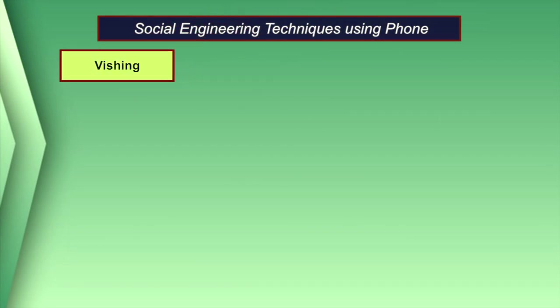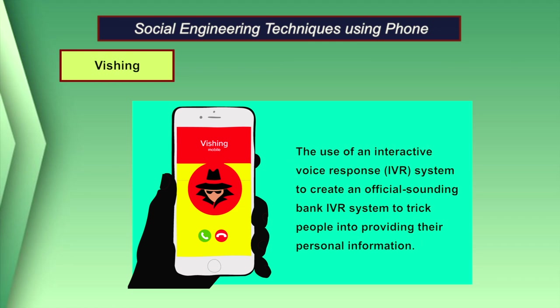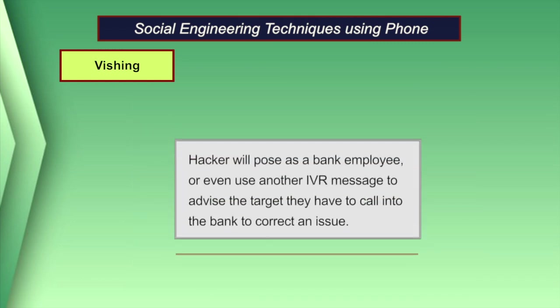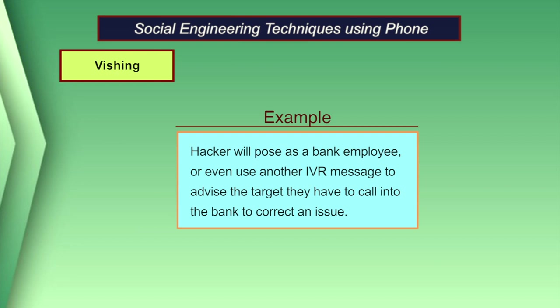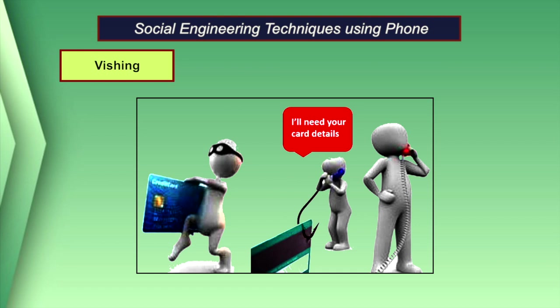The second technique is using IVR or phone phishing, also known as vishing. This involves using an interactive voice response system to create an official-sounding bank IVR system to trick people into providing their personal information. For example, a hacker will pose as a bank employee or use an IVR message to advise the target to call a number — which is not the bank's actual number — and when the target calls, their account information is recorded as it is entered into the phone. A hacker could also use the same method to attack a company employee and have them enter their password via telephone.